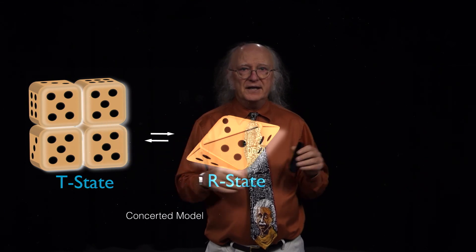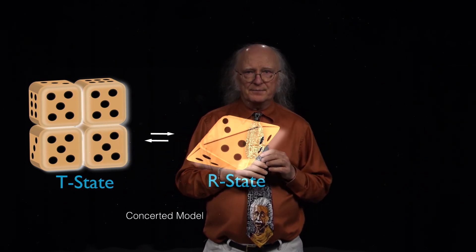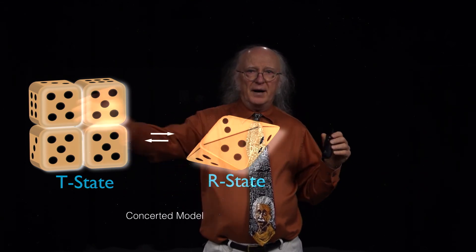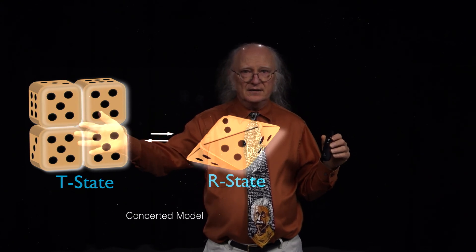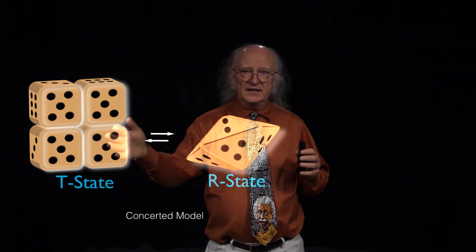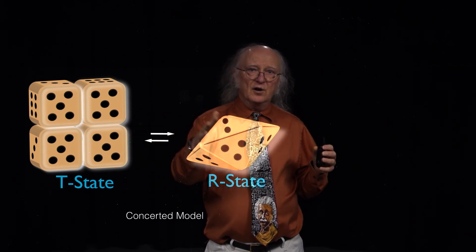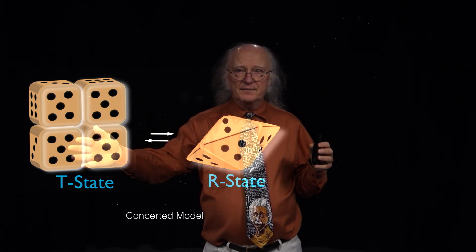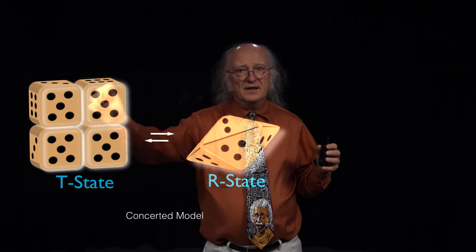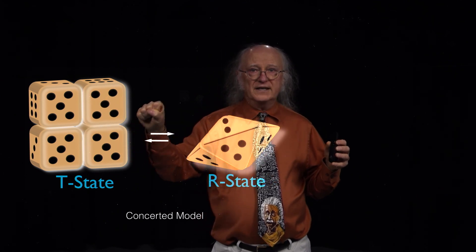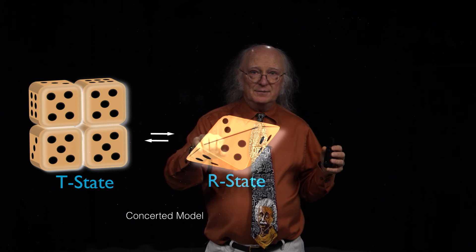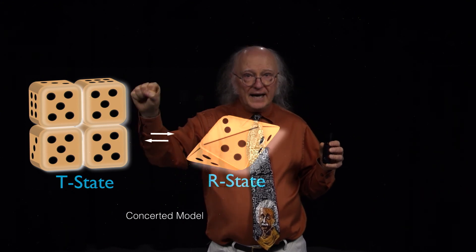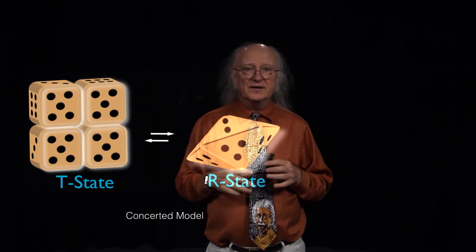On the other hand, CTP inhibits the enzyme — not by binding to it and causing it to turn into the T state, but rather because the enzyme flips back and forth between the T and the R state. When it flips into the T state and binds to CTP, that holds it in that state. So the more CTP you have, the more enzyme will be held in the T state.